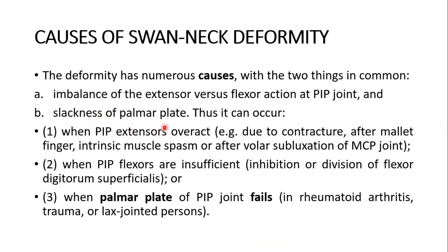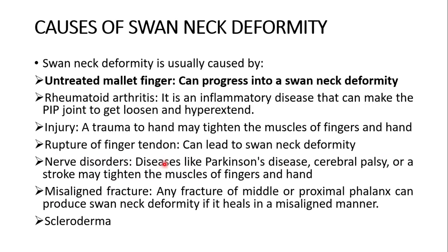It can occur when proximal interphalangeal extensors overact — for example, due to contracture after mallet finger, intrinsic muscle spasm, or after volar subluxation of the metacarpophalangeal joint. Number two, when proximal interphalangeal flexors are insufficient: inhibition or division of the flexor digitorum superficialis. Or number three, when the palmar plate of the proximal interphalangeal joint fails — in rheumatoid arthritis, trauma, or lax-jointed persons.